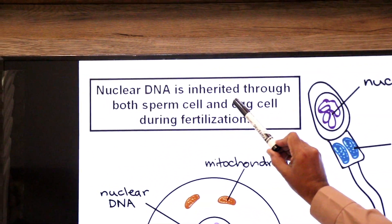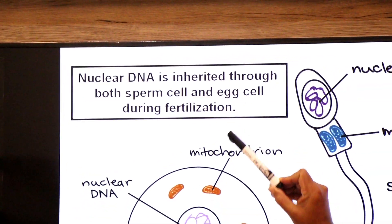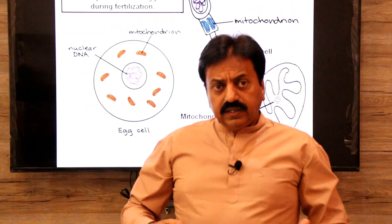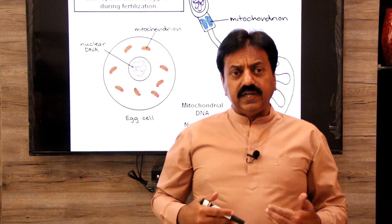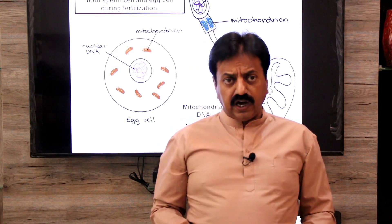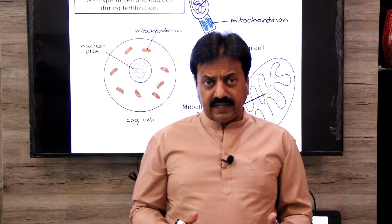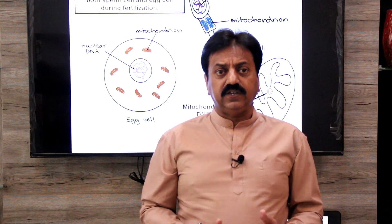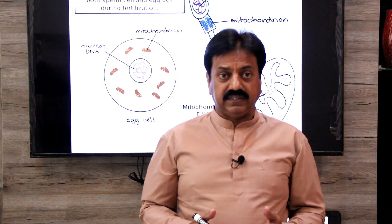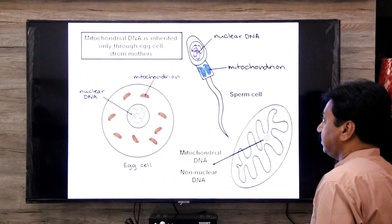Nuclear DNA is inherited through both sperm and egg cell during fertilization. Fertilization is the fusion of sperm and egg to form a diploid zygote. During fertilization, the father contributes his nuclear DNA through the sperm, and the mother contributes her nuclear DNA through the egg.